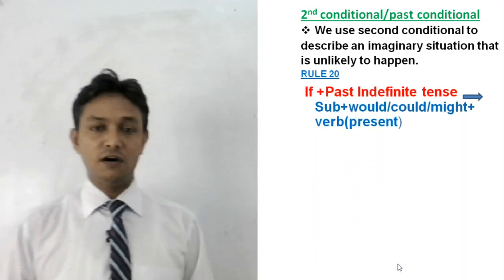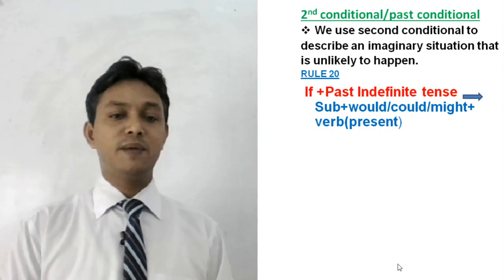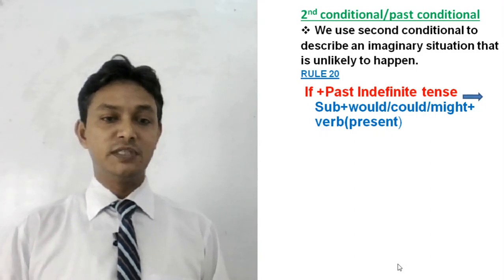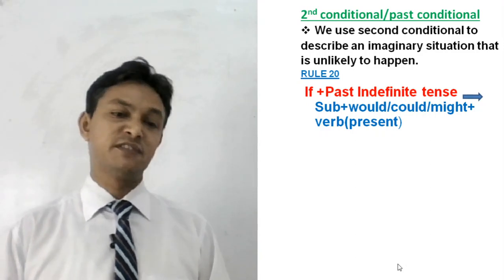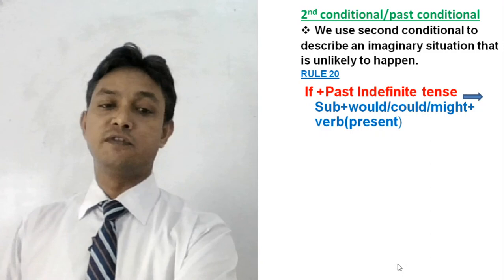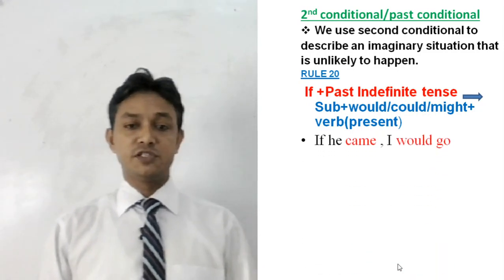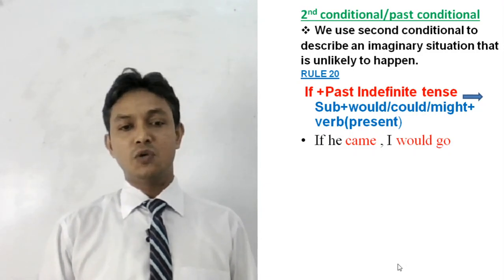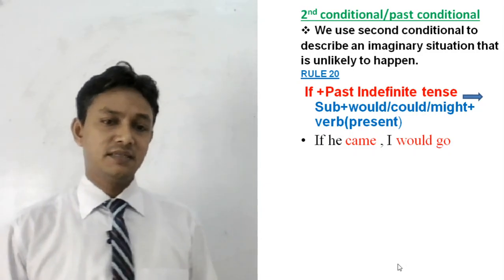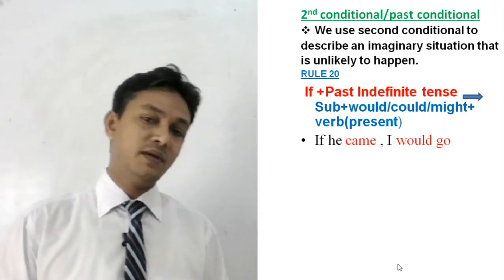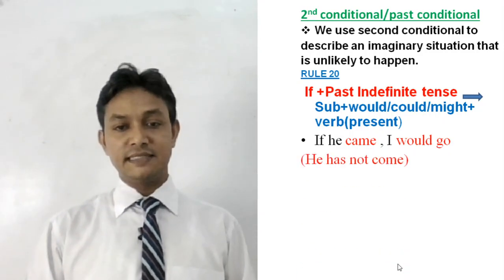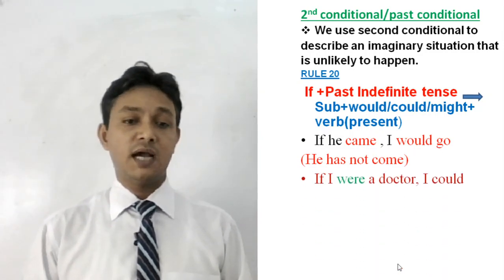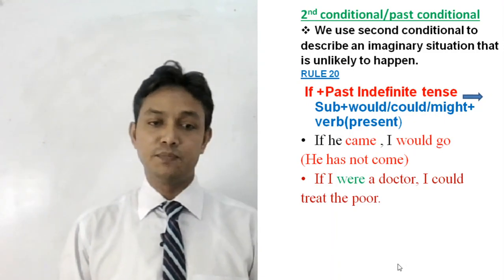The structure of second conditional is: if plus past simple, and the main clause is written with would, might plus V1 or the base form of the verb. Example: 'If he came, I would go' — normally he has not come, but I am expressing the imaginary situation. Another example: 'If I were a doctor, I could treat the poor' — I am not a doctor, but I am imagining that situation.